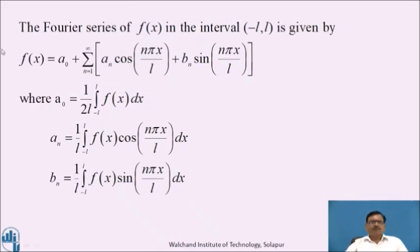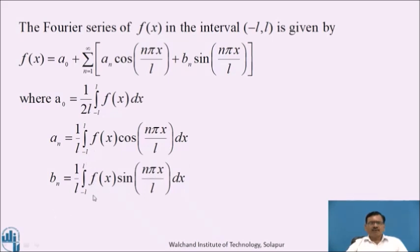Now, the Fourier series of f in the interval minus L to L is given by f(x) = a₀ + summation of n=1 to infinity of aₙ cos(nπx/L) + bₙ sin(nπx/L), where a₀ = (1/2L) ∫₋ₗᴸ f(x) dx, aₙ = (1/L) ∫₋ₗᴸ f(x) cos(nπx/L) dx, and bₙ = (1/L) ∫₋ₗᴸ f(x) sin(nπx/L) dx.